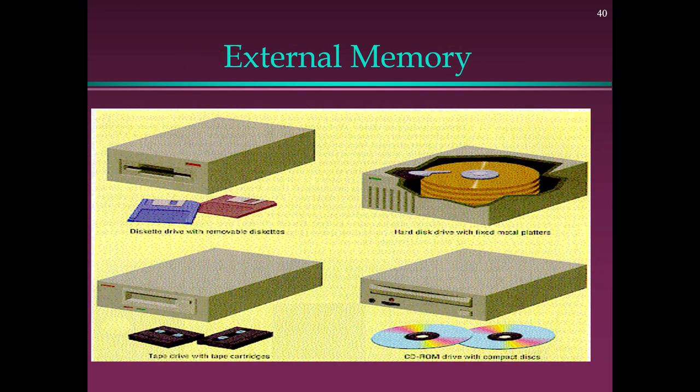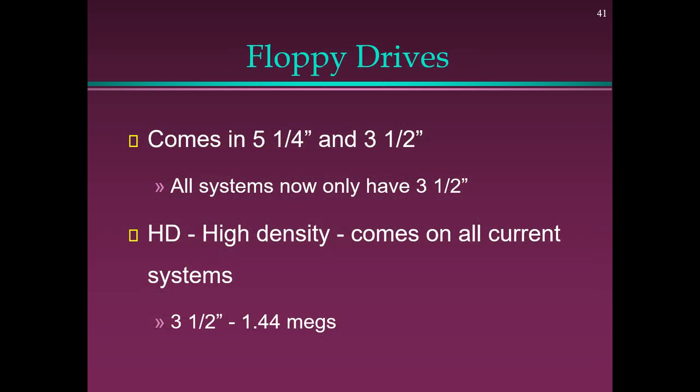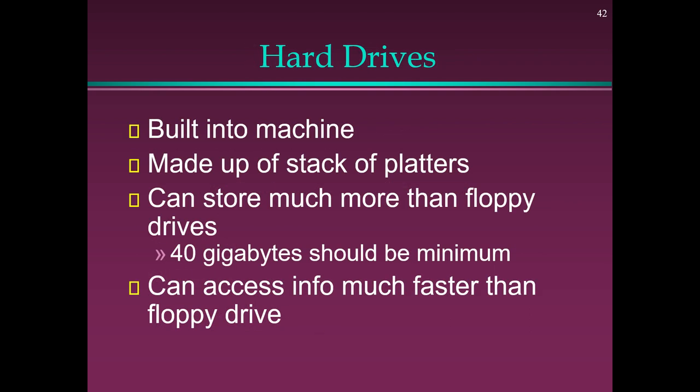External Memory Devices — Floppy Drives: Come in 5.25 and 3.5 inch sizes; all current systems only have 3.5-inch HD (High Density), which holds 1.44 MB. Hard Drives: Built into machines, made up of a stack of platters. Can store much more than floppy drives — 40 GB should be minimum. Can access information much faster than a floppy drive.